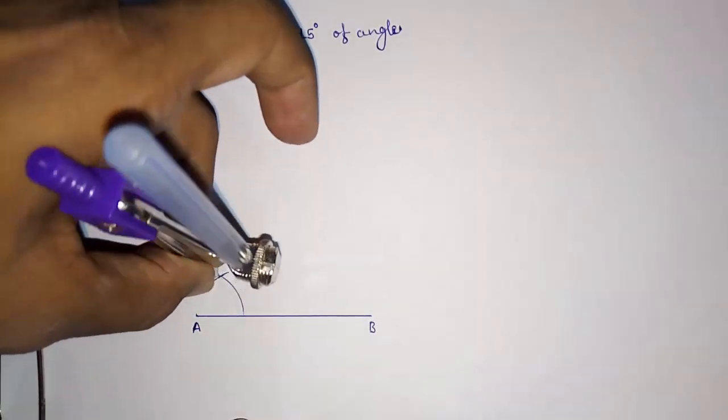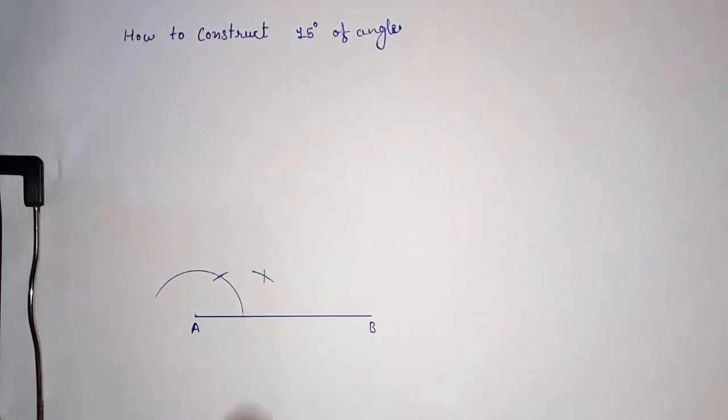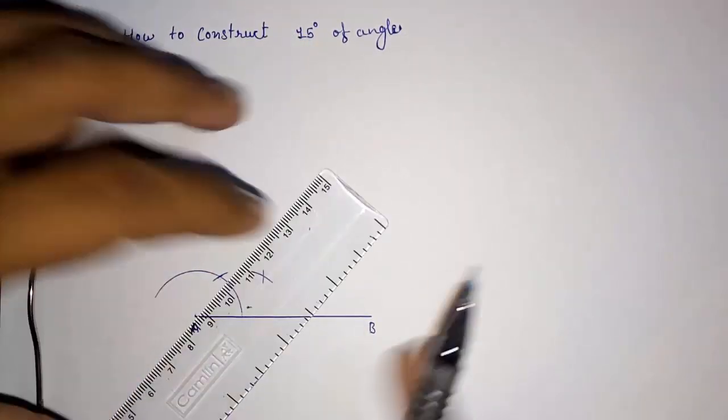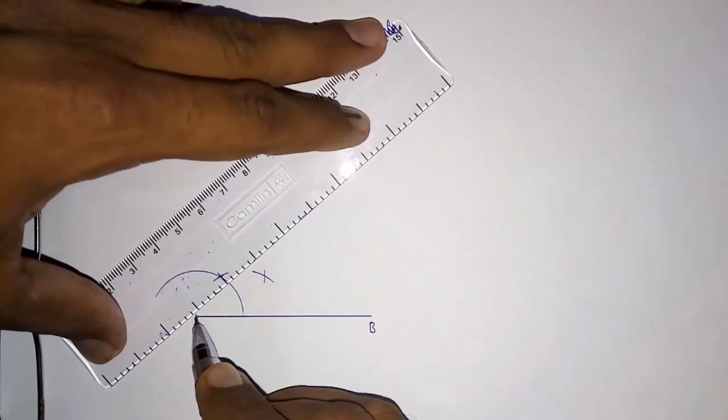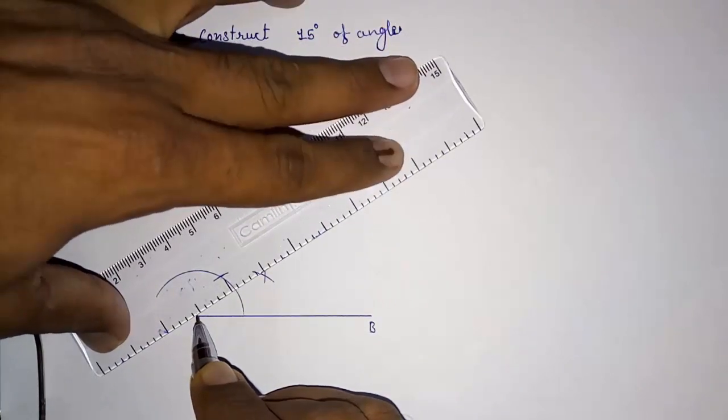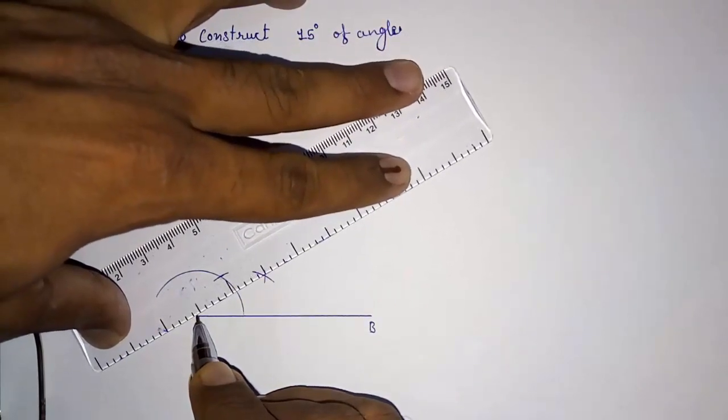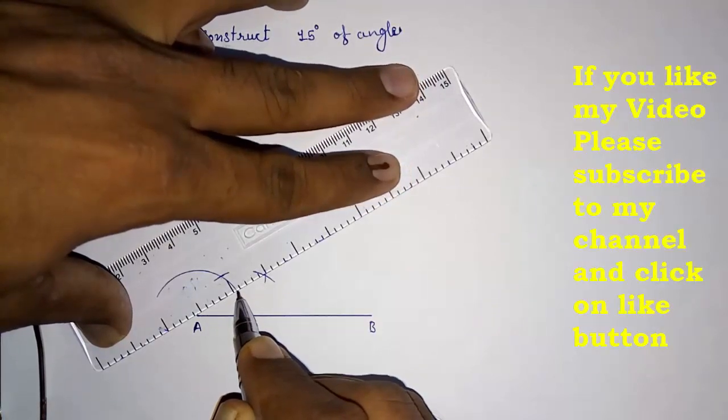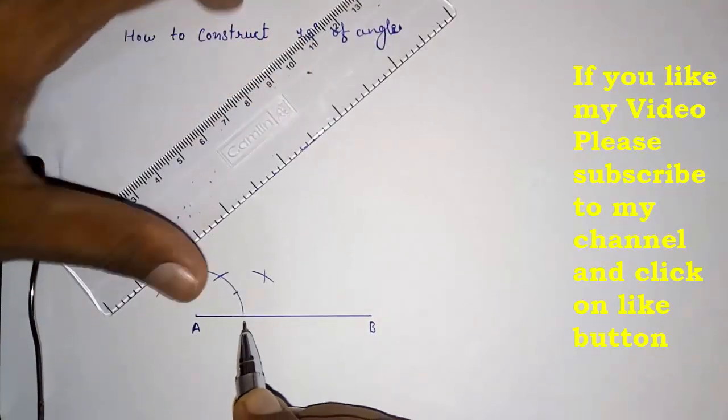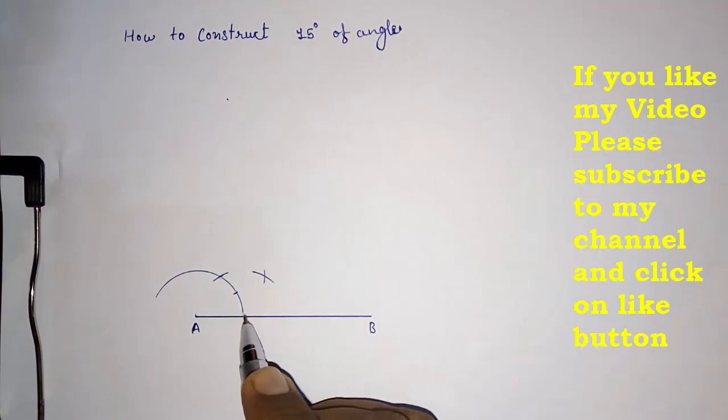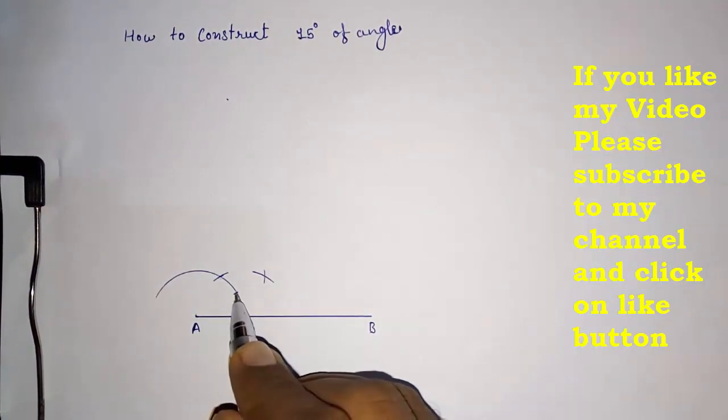You have to make a line from this point to where the arcs intersect. We want the point where it intersects here. This is our protractor, so this will be your zero degree.